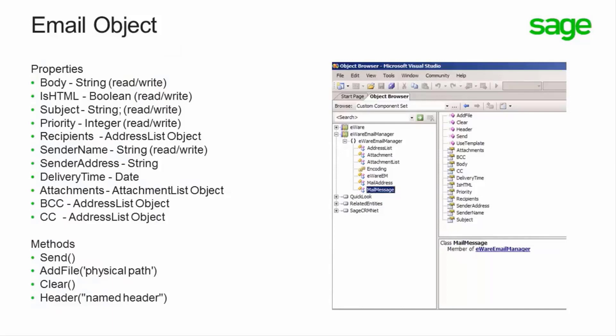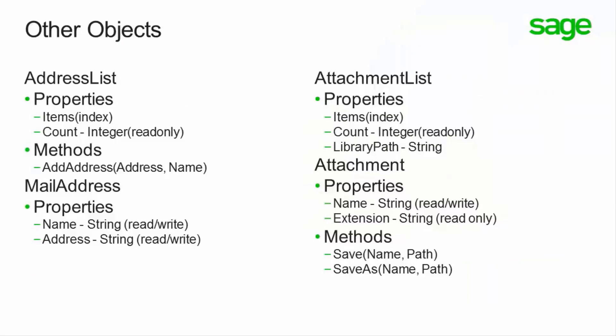The email object is automatically passed to the template script and is globally available to all functions. It has properties and methods to allow the inbound email to be processed. Properties include the body (a string), isHTML, subject, priority, recipient, sender's name, sender's address, delivery name, and attachments. Methods for the email object include send, add file, clear, and the ability to create a named header. The object also exposes an address list where you can reference properties like items, count, and individual addresses within the address list.